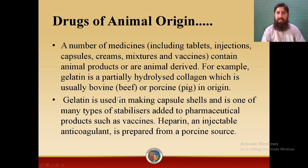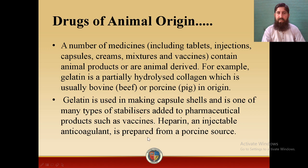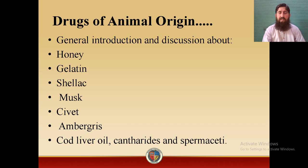Gelatin is used in making capsule shells and is also used as a stabilizer in pharmaceutical products such as vaccines. Another drug is heparin, which is used in injectable form and is an anticoagulant prepared from a porcine source. The drugs included in our syllabus by HEC are honey, gelatin, shellac, musk, civet, ambergris, cod liver oil, cantharoids, and spermaceti.